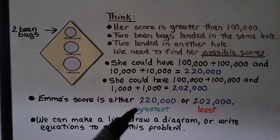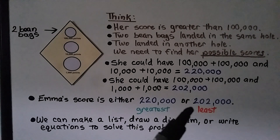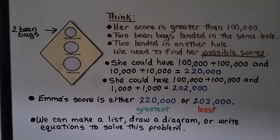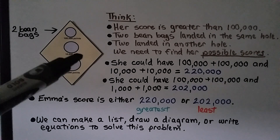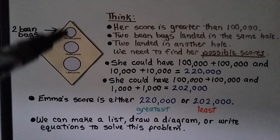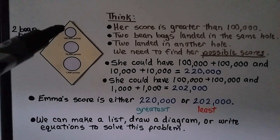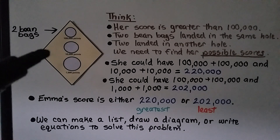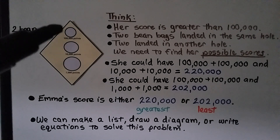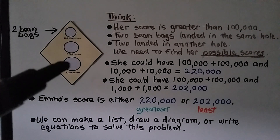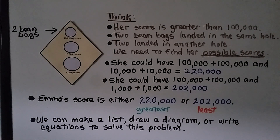Emma's greatest possible score is 220,000 and the least possible score is 202,000. We can make a list, draw a diagram, or write equations to solve this problem. You could even draw the board on scratch paper and put an X over one hole to figure out each combination.